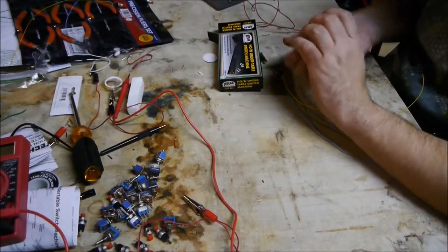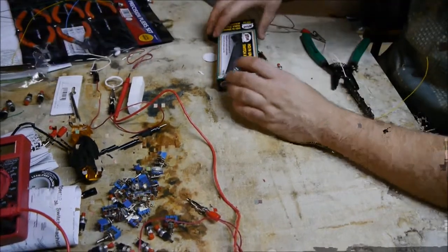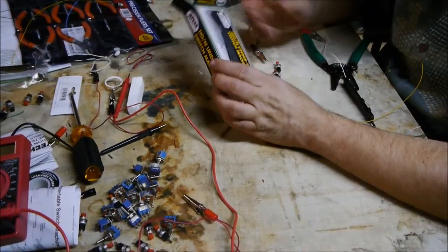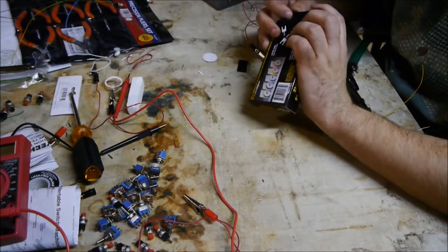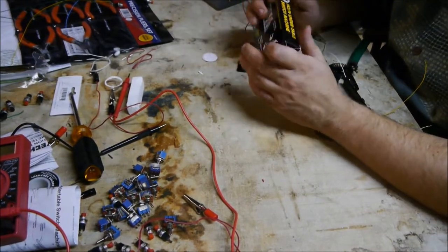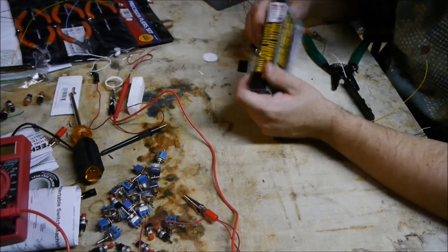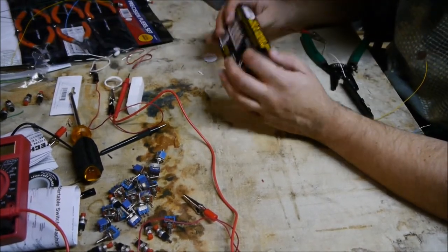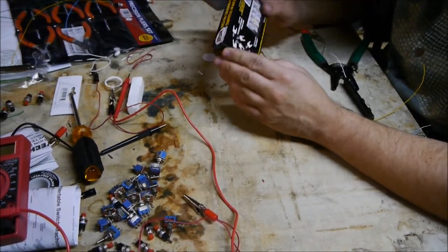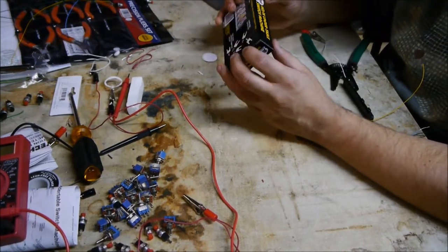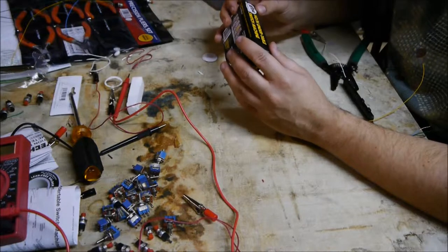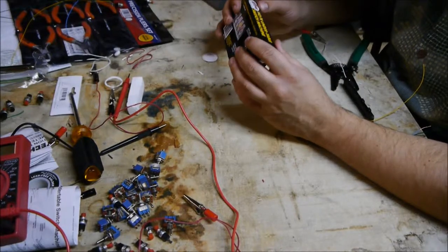And actually, when I designed my layout, I wasn't going to have switch machines. I was going to actually switch by hand using Caboose industry ground throws, because they're a little bit cheaper. They're about six bucks or so. And a two foot by four foot layout is small enough that I could reach all the switches.